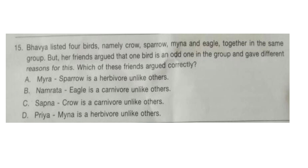Question 15: Bhavya listed 4 birds — crow, sparrow, mina, and eagle — together in the same group. But her friends argued that one bird is the odd one out and gave different reasons. Which friend argued correctly? The correct answer is option B. Namrata said eagle is a carnivore, unlike the others — crow, sparrow, and mina are omnivore birds.